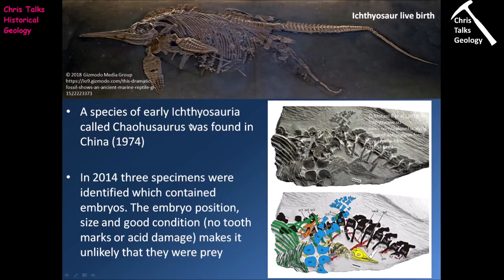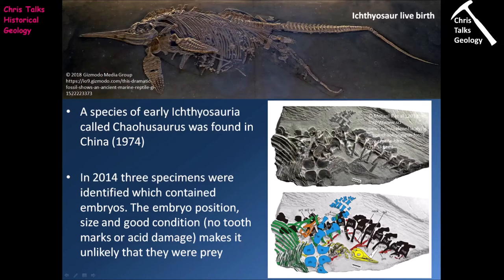In terms of ichthyosaur reproduction, they appear to have given birth to live young. Looking at this example, here is the ichthyosaur skeleton, and right there you can see an embryonic ichthyosaur. There are a couple of ways to interpret this skeleton: the mother ichthyosaur may have died while giving birth, or the fetus was forced out of the body as the body cavity began to fill up with gases due to decomposition.